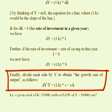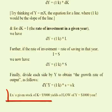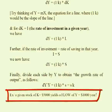The economy's growth is a function of its savings and the capital-output ratio. For example, a given stock of capital of $5,000 might yield a flow of output every year of $1,000.